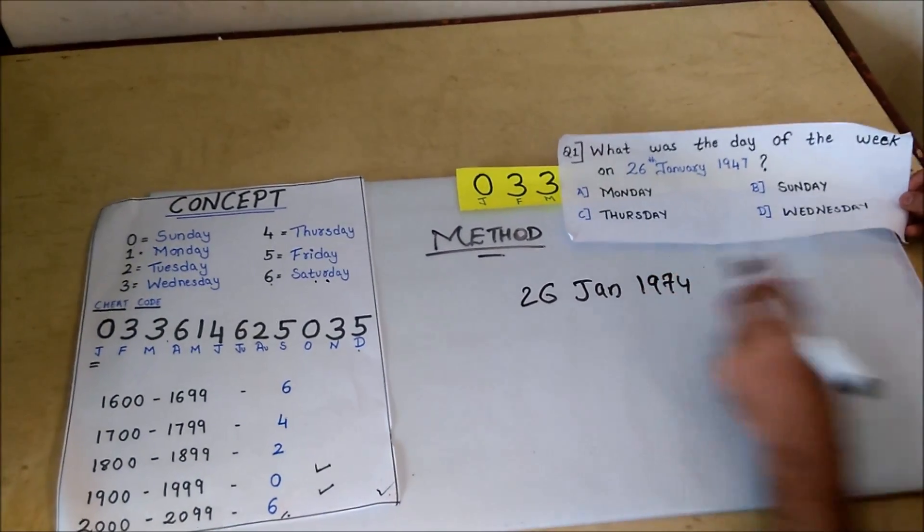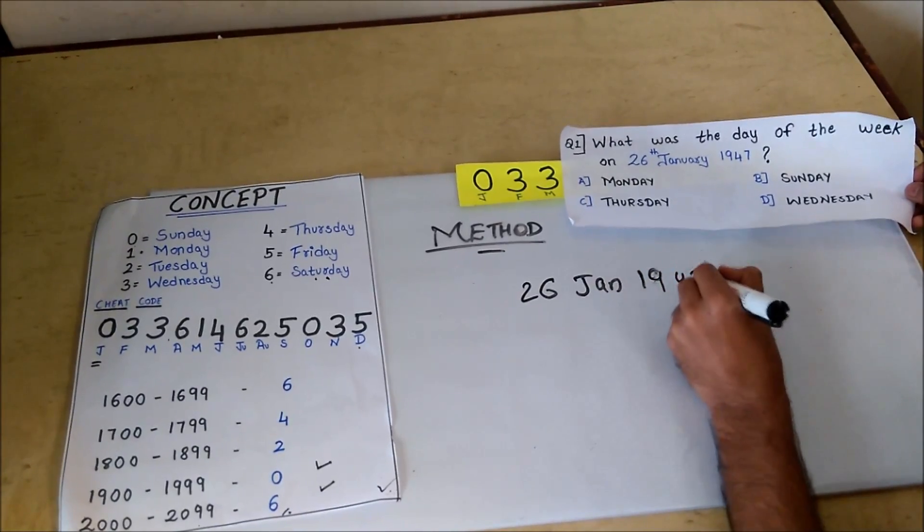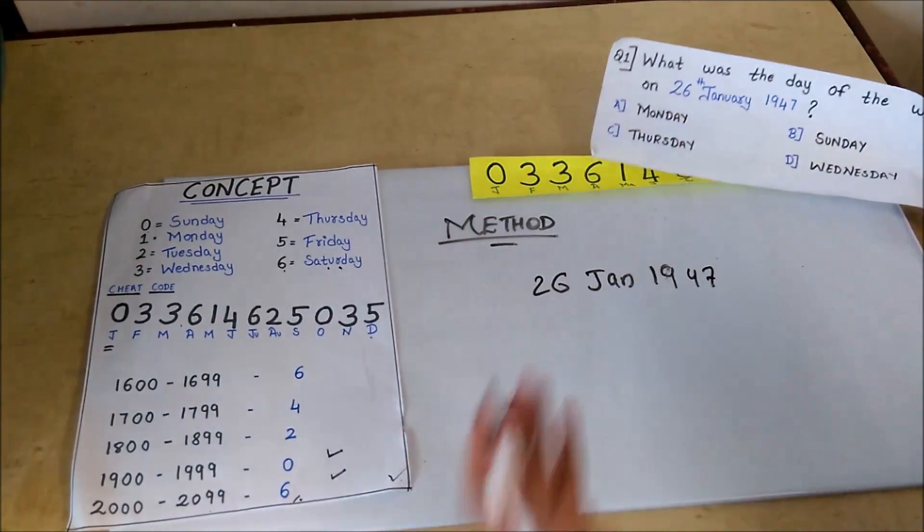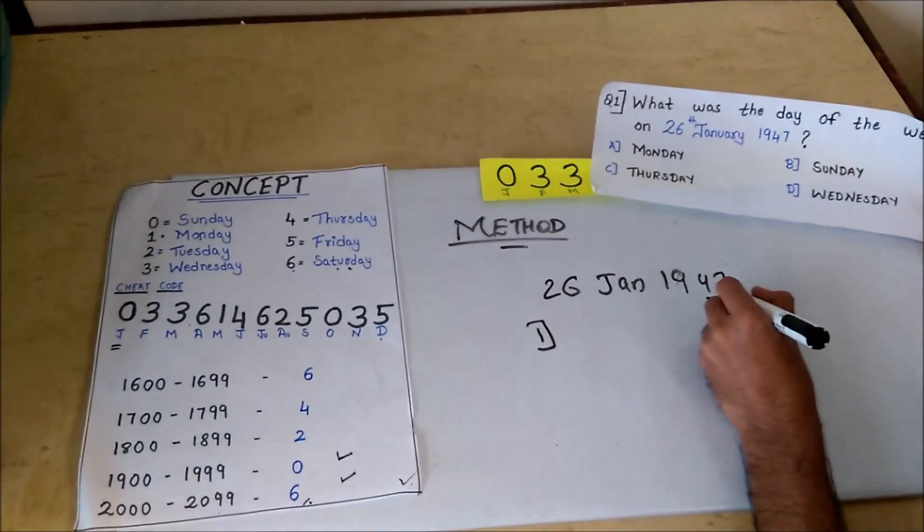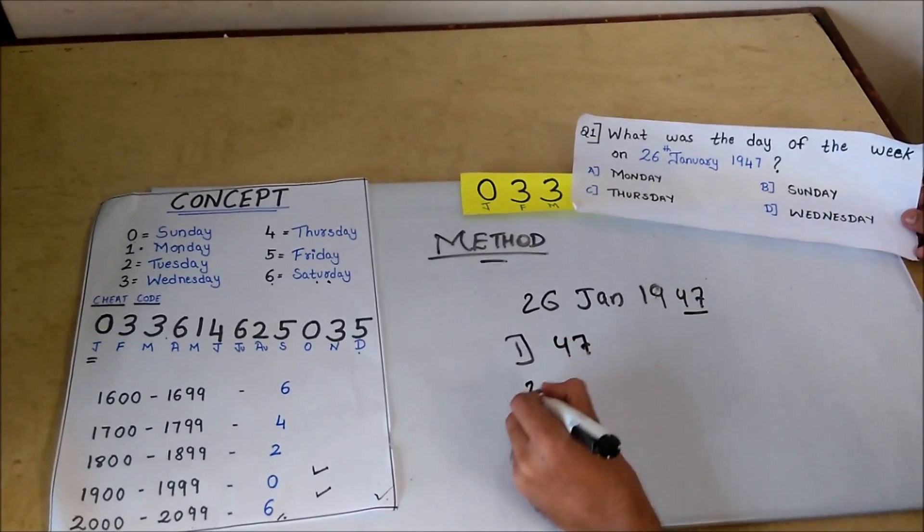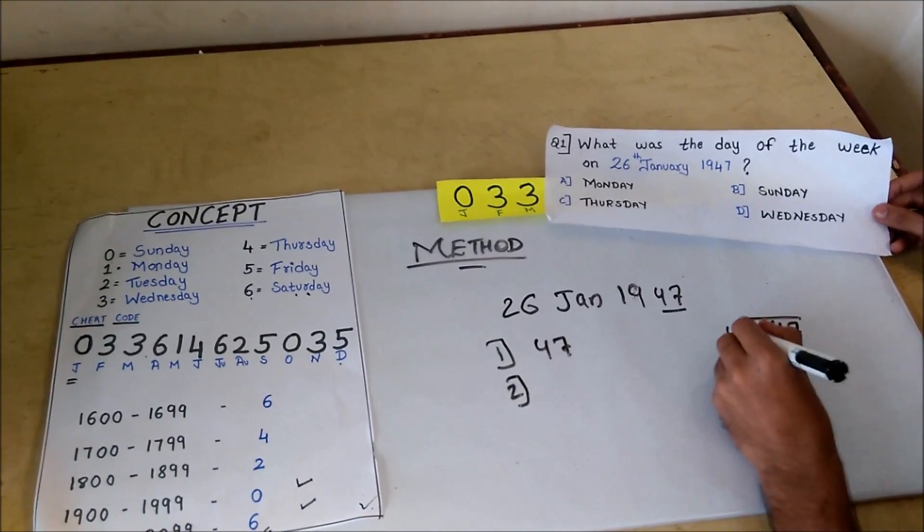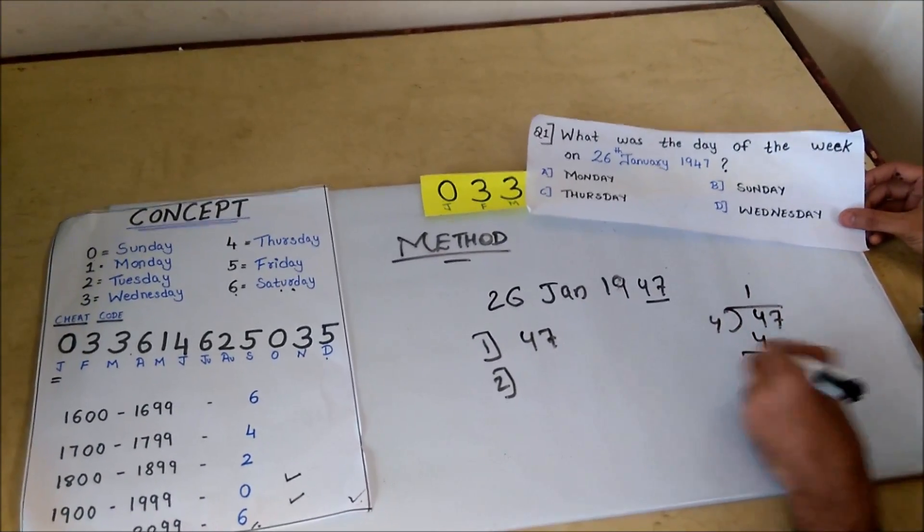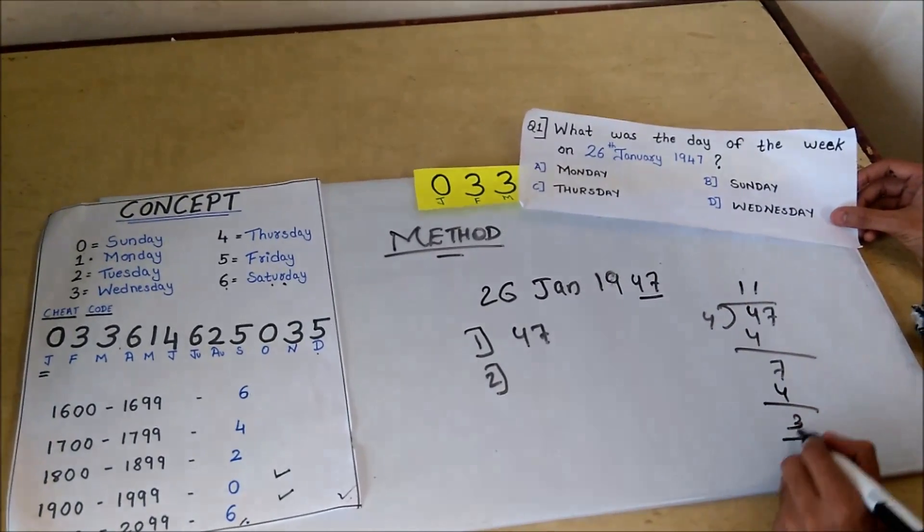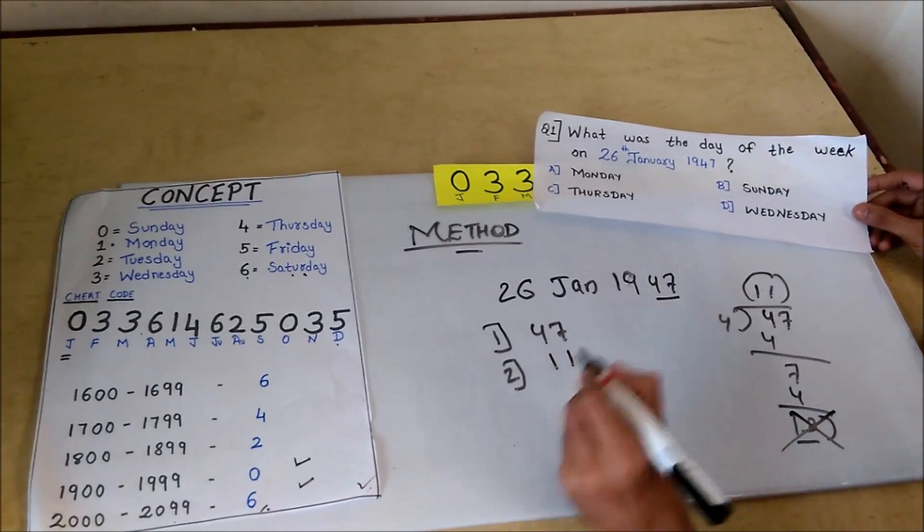Let me show you the method and the trick how to solve it. First thing you have to consider is the last two digits of the year: 47. Second, we have to divide these two digits by 4. 4 times 11 is 44. We got remainder 3. We only have to take the quotient, we have to discard the remainder. That is 11.